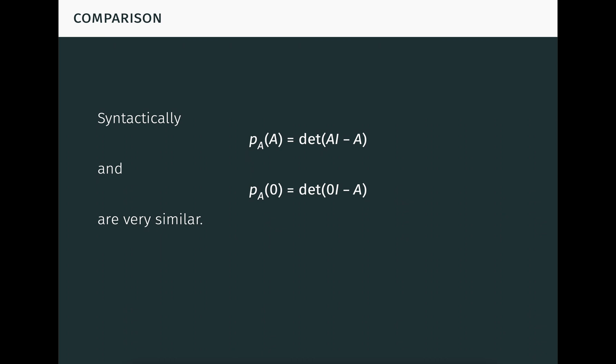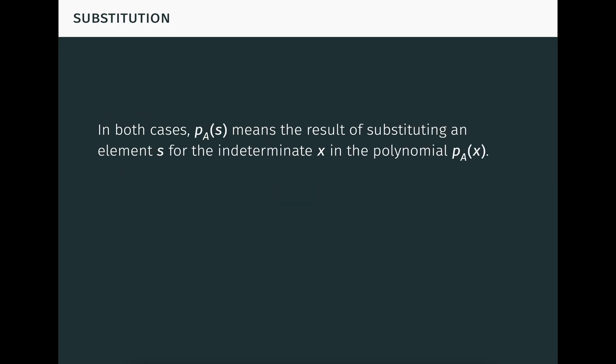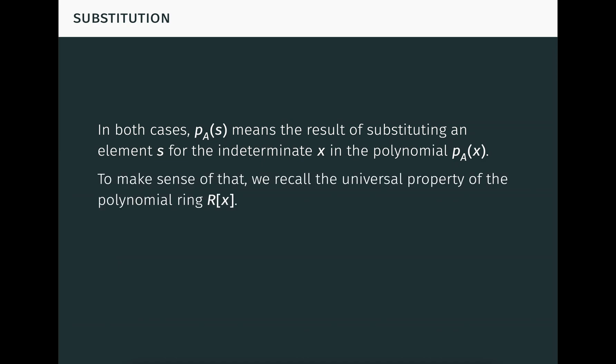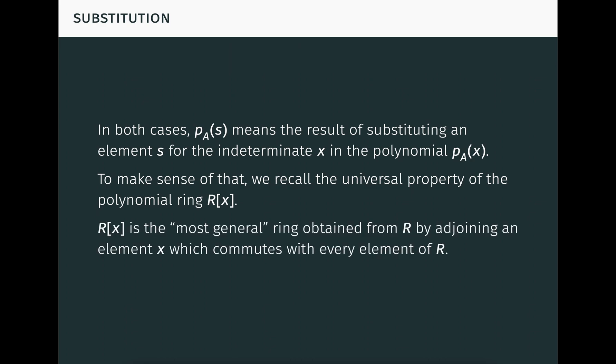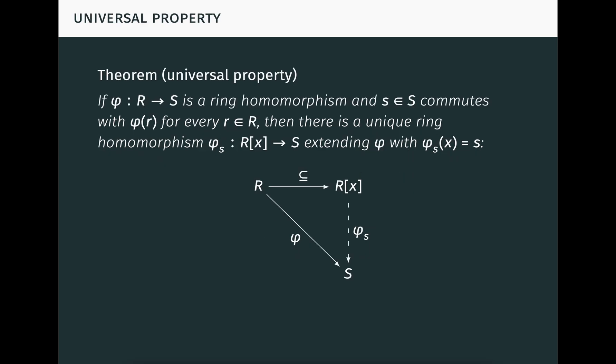In order to answer that question, we must examine the semantics involved. In both cases, P_A of s means the result of substituting some element s for the indeterminate x in the polynomial P_A of x. To make sense of that, we recall the universal property of the polynomial ring R[x]. In a certain sense which the universal property makes precise, R[x] is the most general ring obtained from R by adjoining a single element x which commutes with every element of R under the ring multiplication.